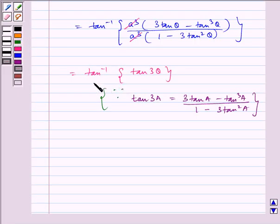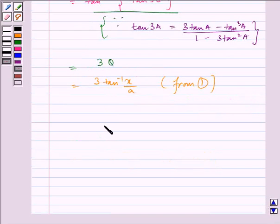So, this gets equal to tan inverse of tan 3 theta, which is equal to 3 theta, which is equal to 3 tan inverse x by a from equation 1. Thus, the required answer is 3 tan inverse x by a.